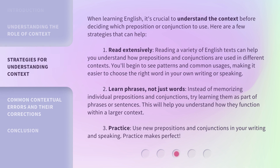When learning English, it's crucial to understand the context before deciding which preposition or conjunction to use. Here are a few strategies that can help. First, read extensively. Reading a variety of English texts can help you understand how prepositions and conjunctions are used in different contexts. You'll begin to see patterns and common usages, making it easier to choose the right word in your own writing or speaking.